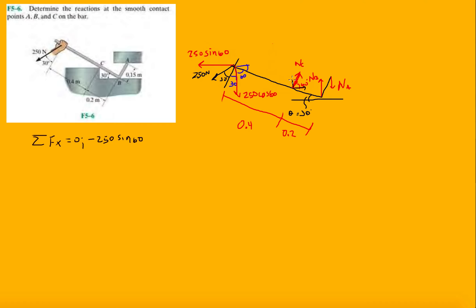Now we have N_C as we split off into this component and this component, so it's gonna be N_C cosine 60. So plus N_C cosine 60 equals zero.